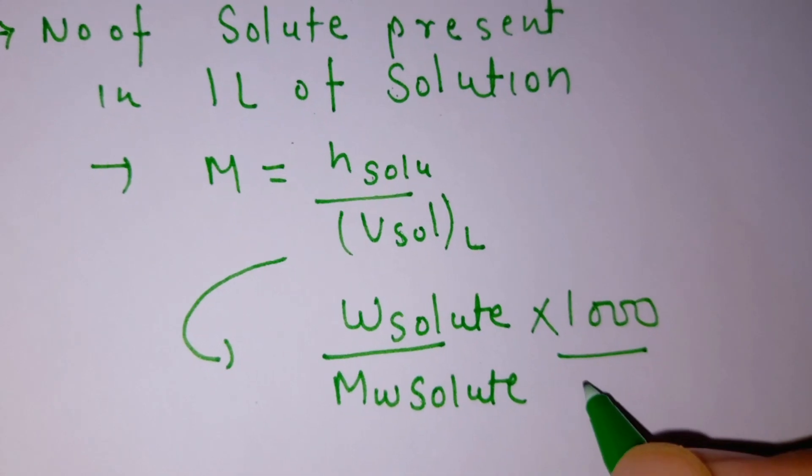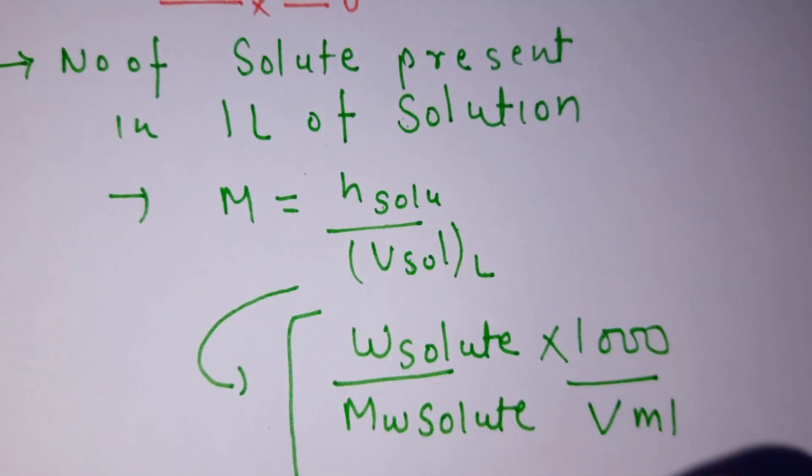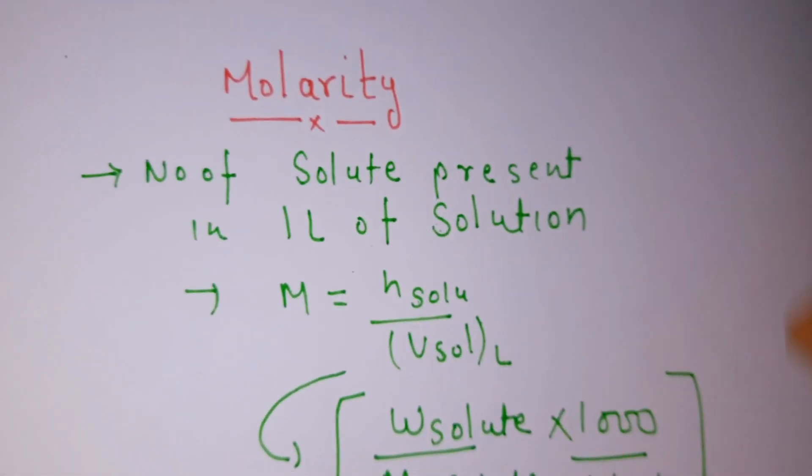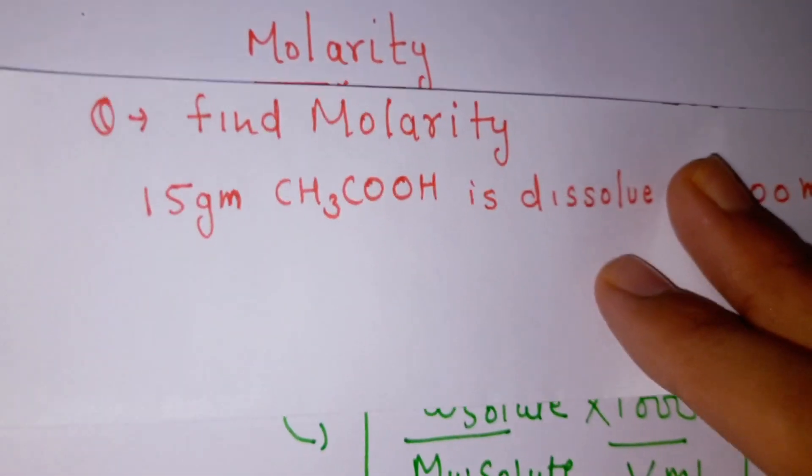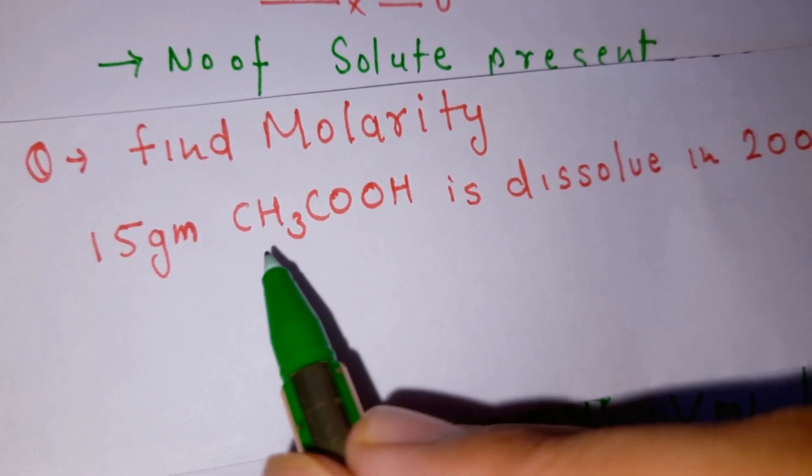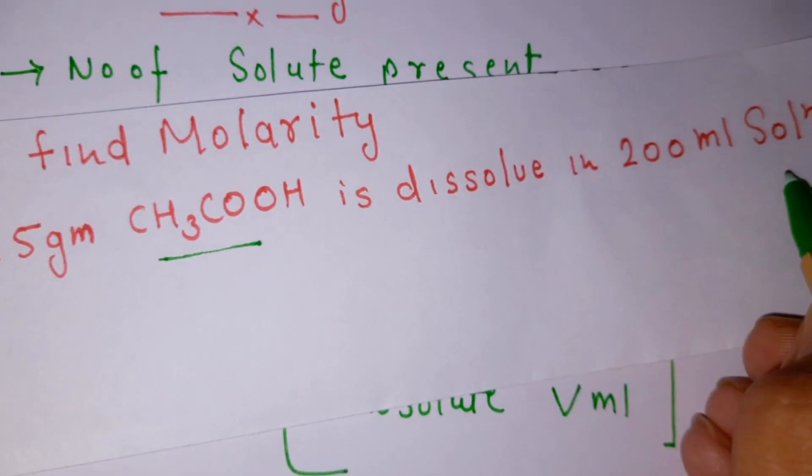This is the formula of molarity. Now take some example, then find molarity. 15 gram acetic acid is dissolved in 200 ml solution.